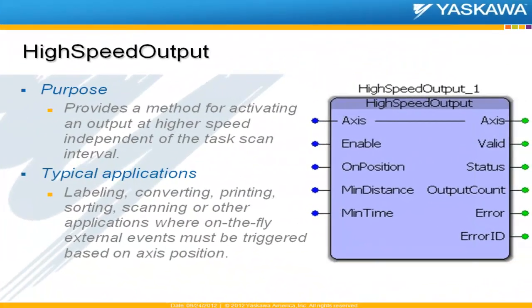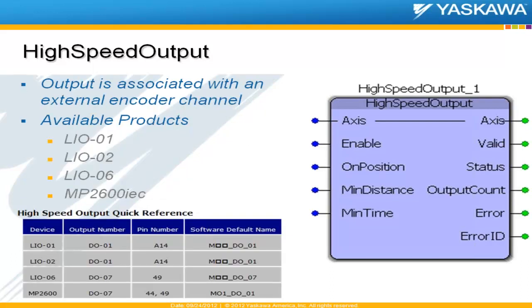The last feature to cover is the high-speed output. We've used this in a couple of high-speed applications. It provides a method for activating an output at high speed, independent of the task scan interval. Applications that might need this include converting or labeling, printing, triggering a vision camera for inspection, or any situation where on-the-fly external events have to be triggered based on axis position.